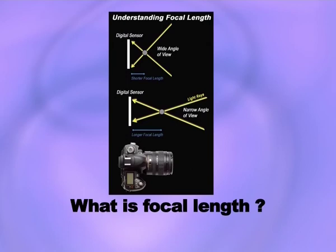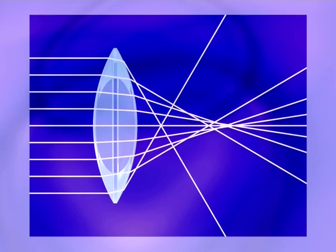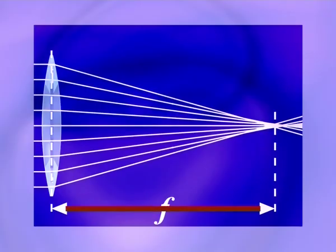Every lens has a focal length. Focal length technically is the distance between the rear nodal point of a lens and the surface or plane on which the image is being formed, when the light rays are traveling from infinity. When light rays are traveling parallel to each other from a great distance and they hit the lens and converge on a certain surface, the distance between the lens and that surface — called the image surface — is the focal length of that lens.